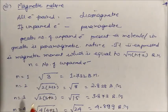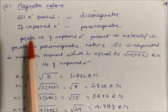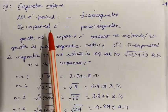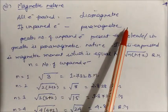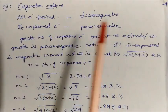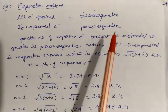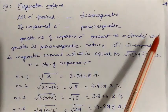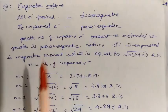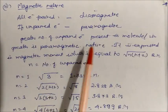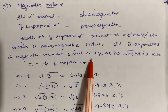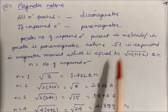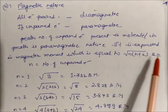The magnetic nature of a molecule is also determined from the molecular orbital configuration. If all electrons are paired, the molecule is diamagnetic. If unpaired electrons are present, the molecule is paramagnetic — for example, oxygen is paramagnetic because it has two unpaired electrons. The number of unpaired electrons present in the molecular ion determines the degree of paramagnetism. Paramagnetism is expressed in terms of magnetic moment: μ = √(n(n+2)) Bohr magnetons (BM), where n is the number of unpaired electrons.